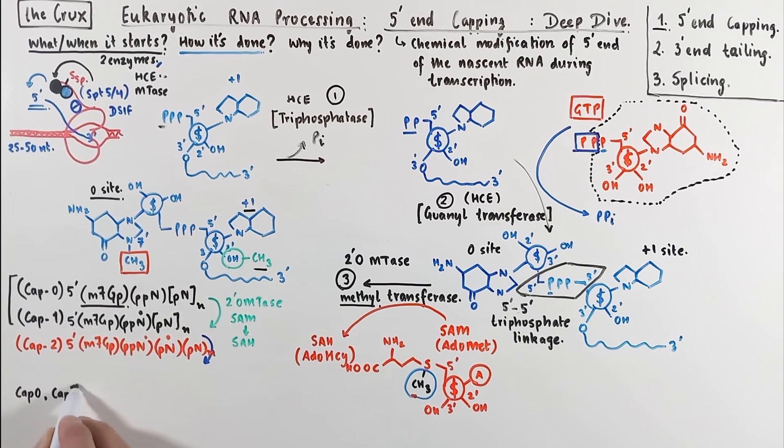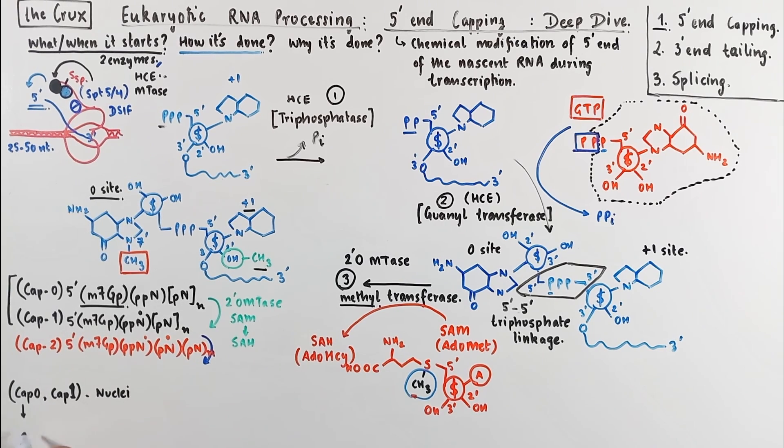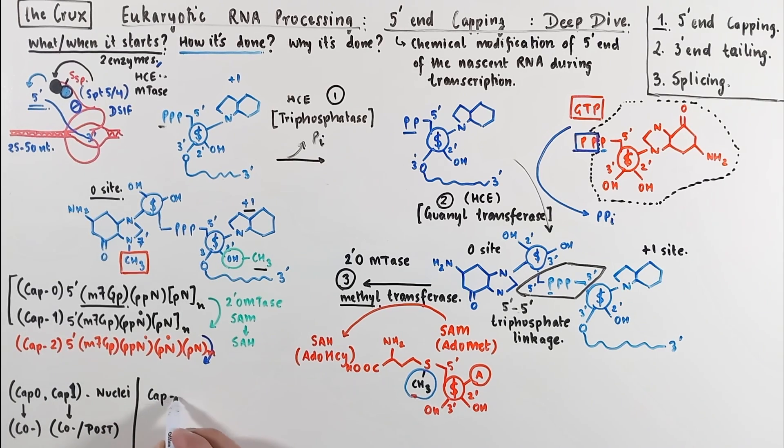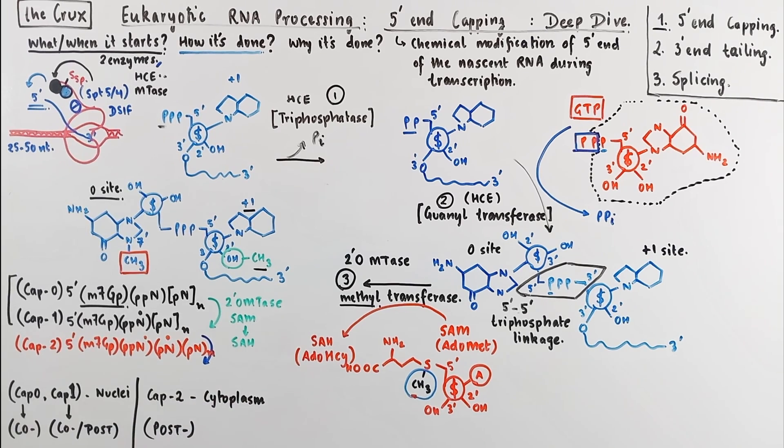Now as for the location, the cap 0 and cap 1 modification occur in the nuclei. The cap 0 is canonical, and it is strictly cotranscriptional. It has to be present in all mRNAs. The cap 1 can be either post or cotranscriptional. Now cap 2 specifically occurs in the cytoplasm only, which means that it is, strictly speaking, a post-transcriptional modification.